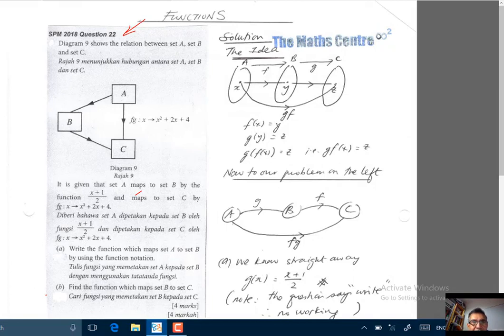Let's read the question. The diagram 9 shows the relation between set A, set B, and set C.